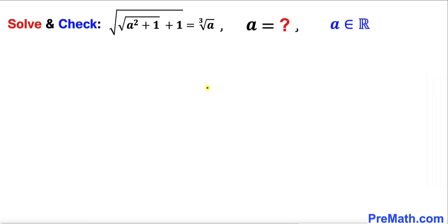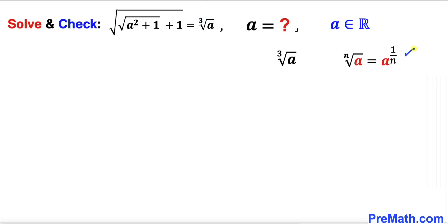Let's get started with the solution. We are going to focus on the cube root of a on the right hand side. Recalling the basic rule, since the index is 3, this radical notation can be written as a power of 1 divided by 3.